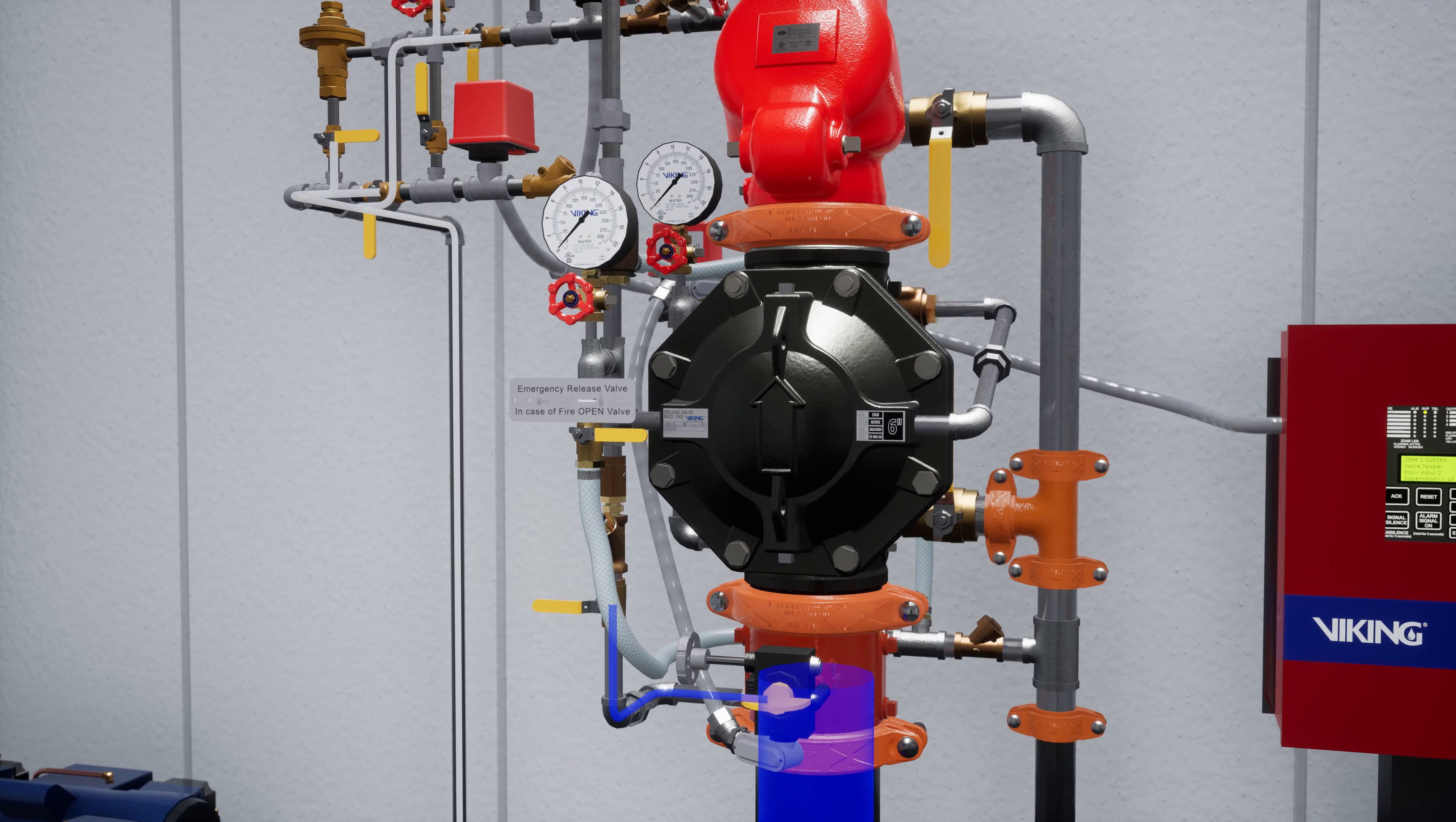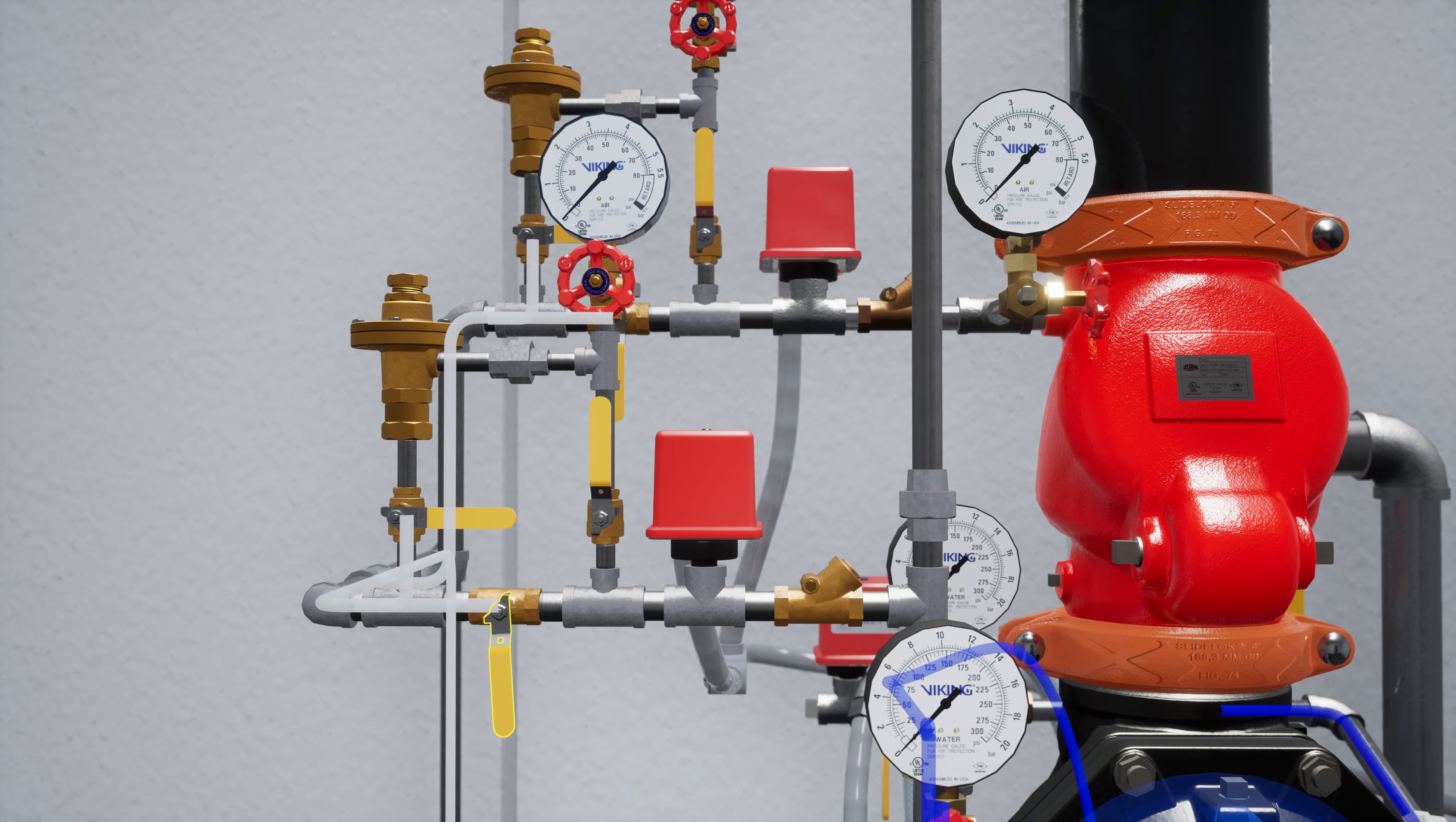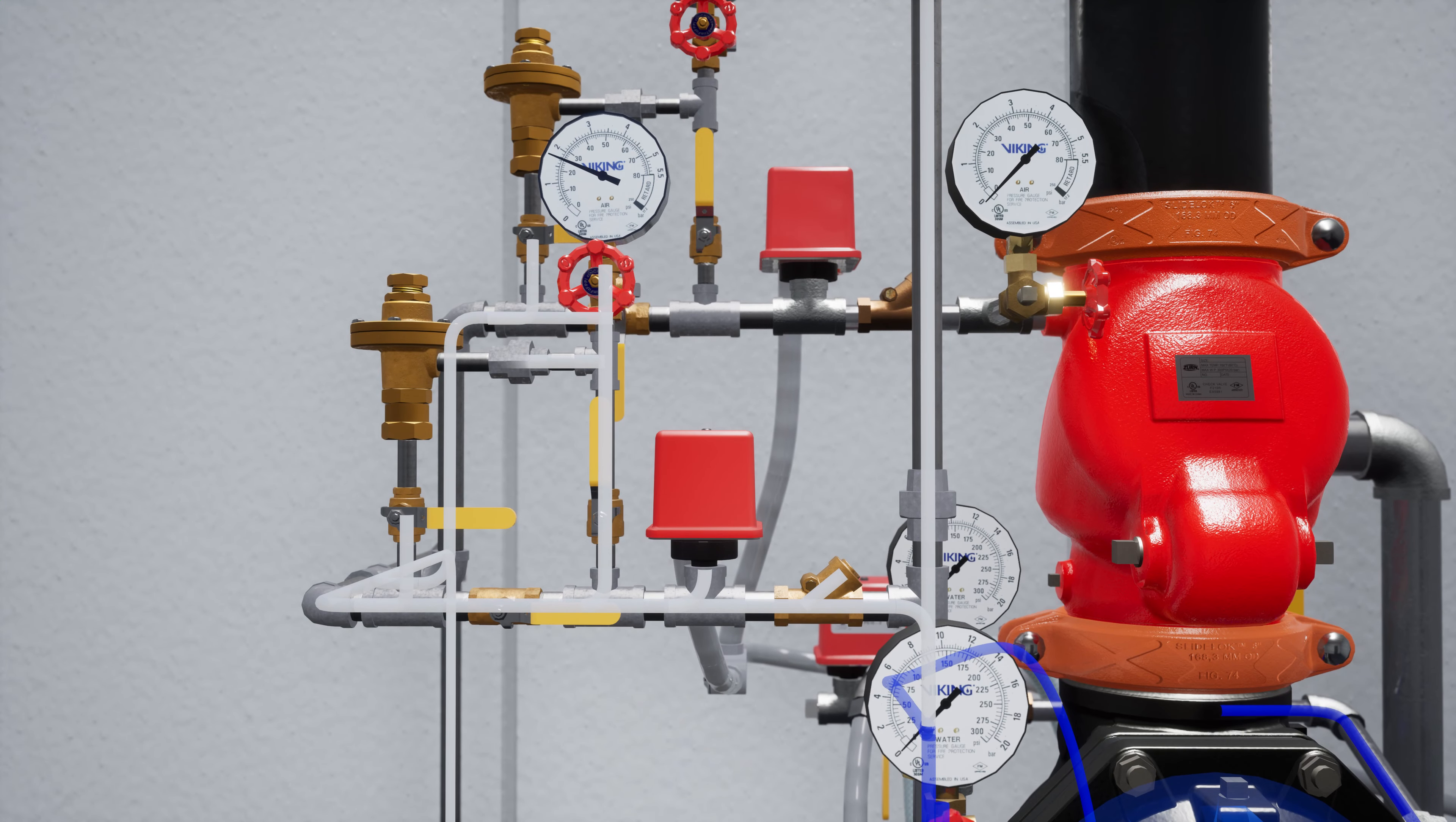Now open the priming valve. Priming water will discharge from the pneumatic actuator to the drain. We can start introducing air to the dry pilot line by opening the air bypass valve on the air maintenance device that leads to the dry pilot line. Once the release line air pressure is within 5 psi of your target air pressure, close the air bypass valve and open the ball valve below the air maintenance device to finish filling the release system.